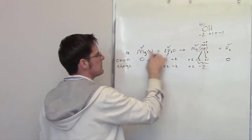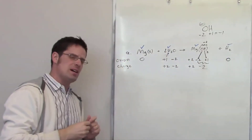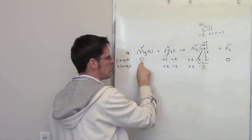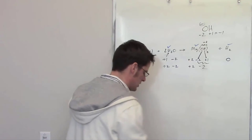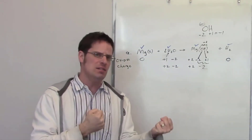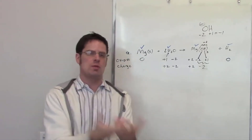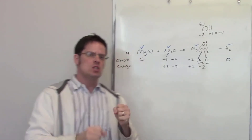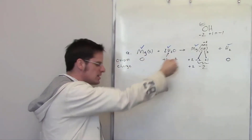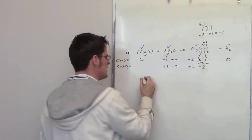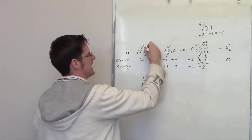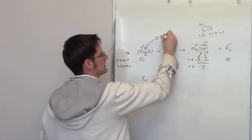The things that change are magnesium and hydrogen. Magnesium goes from a 0 oxidation number to +2 — it's becoming more positive. How do you become more positive? By losing electrons, since electrons have a negative charge. So magnesium must have lost electrons. Losing electrons is oxidation. Therefore, magnesium has been oxidized.